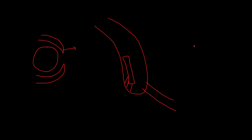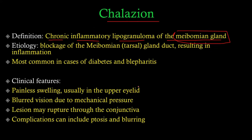Imagine a gland with a duct — if you block that duct, the gland cannot expel its contents. What happens is it gets infected, causing inflammation. So with the meibomian gland, a blockage results in inflammation of the meibomian gland. This is usually seen in patients with diabetes and blepharitis.